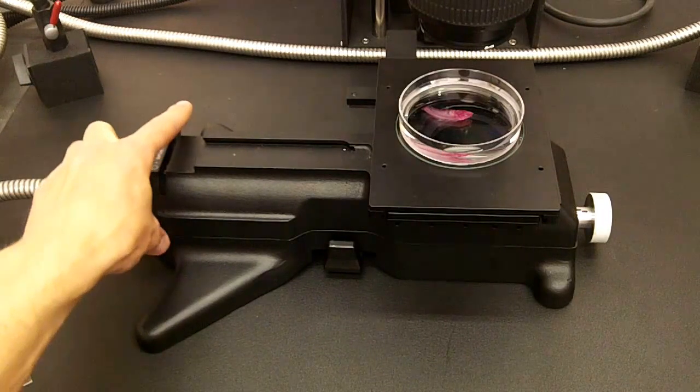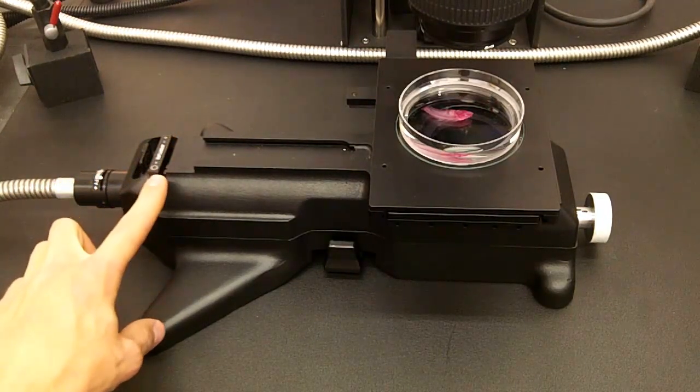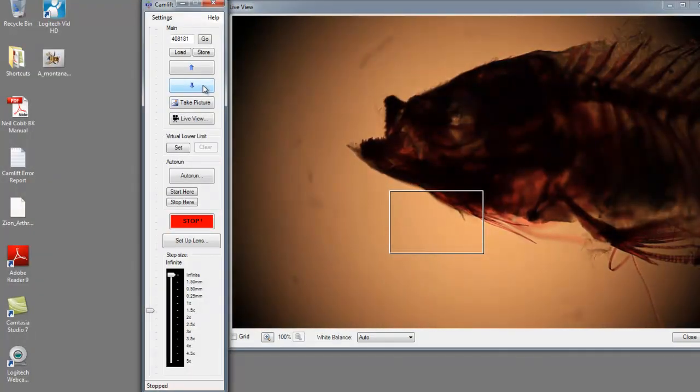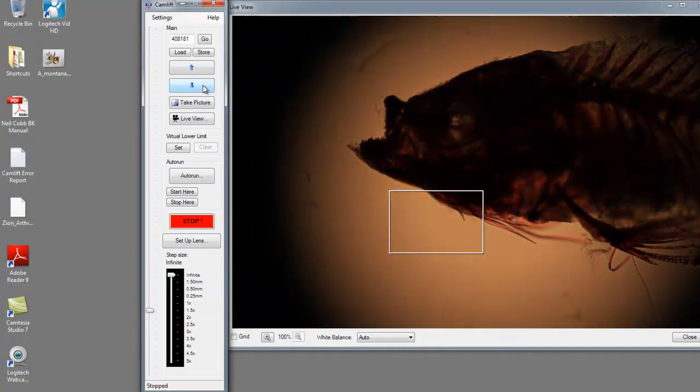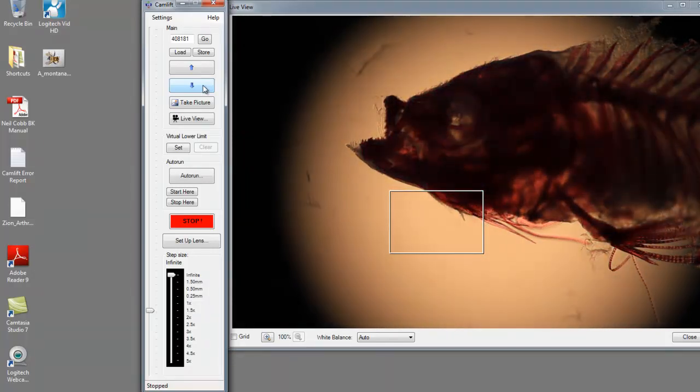This next lever is the aperture lever which adjusts the size of the aperture and the area being backlit. As you can see here, reducing the size of the aperture and then enlarging it again.